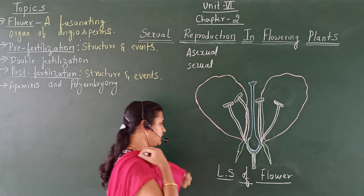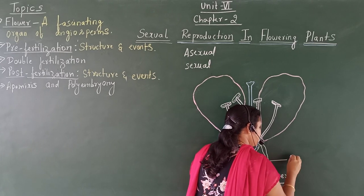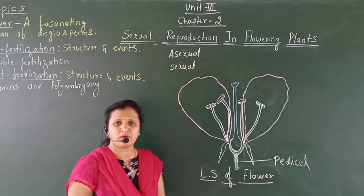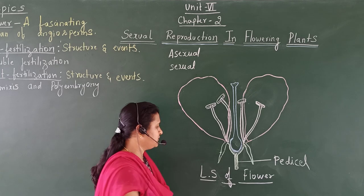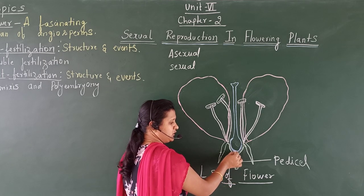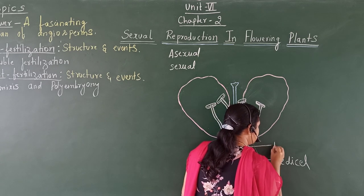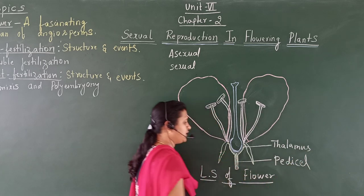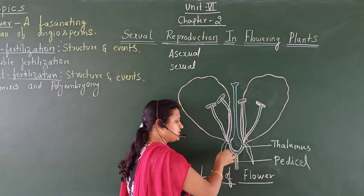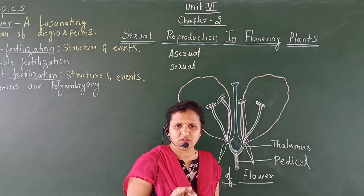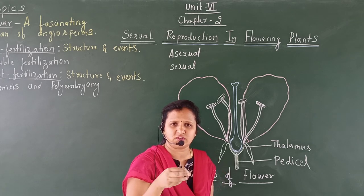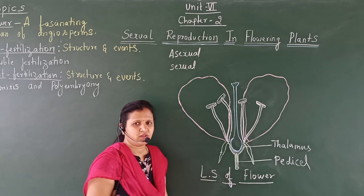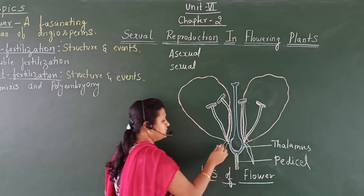The stalk of the flower is called the pedicel, and the tip of the pedicel is slightly swollen, which is called the thalamus. On this thalamus, the four important parts of the flower are present in the form of circles, called the whorls of the flower.